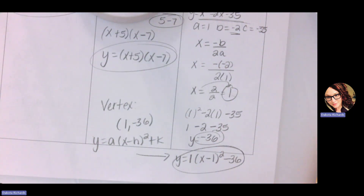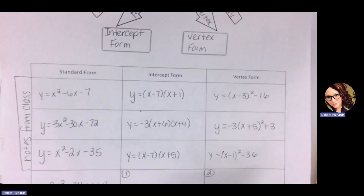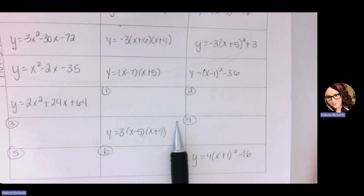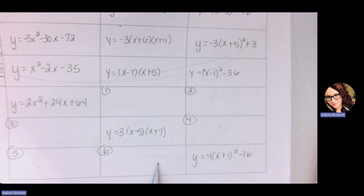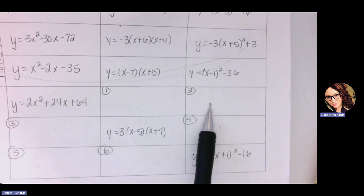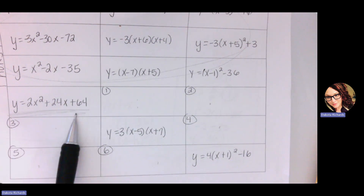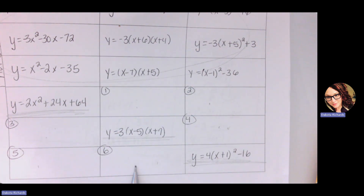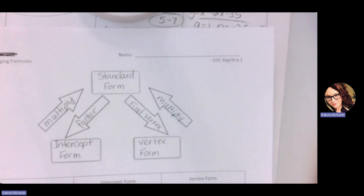Your homework, guys: at the top of this page are the notes we just did. I want you to go and do problems 1 through 6. You're finding intercept and vertex when given standard, finding standard and vertex when given intercept, and finding intercept and standard when given vertex. This little conversion map helps. Re-watch the video if you need to — it'll be on Canvas. I hope you have a great day and I will see you tomorrow.